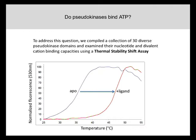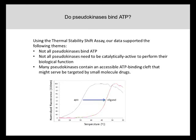Using this assay to characterize our 30 pseudokinases, a number of themes emerged. Not all pseudokinases bind ATP. Not all pseudokinases need to be catalytically active to perform a biological function. And many of these pseudokinases contain an accessible ATP binding cleft which may serve as a target for small molecule drugs.